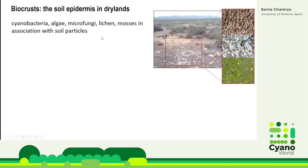In these areas, we have a soil community that covers the open spaces between plants, which is known as biocrust, and that is the soil epidermis in drylands. They are a community composed of different organisms — bacteria, algae, micro fungi, lichens, mosses — in association with soil particles that cover all these open spaces between shrubs.